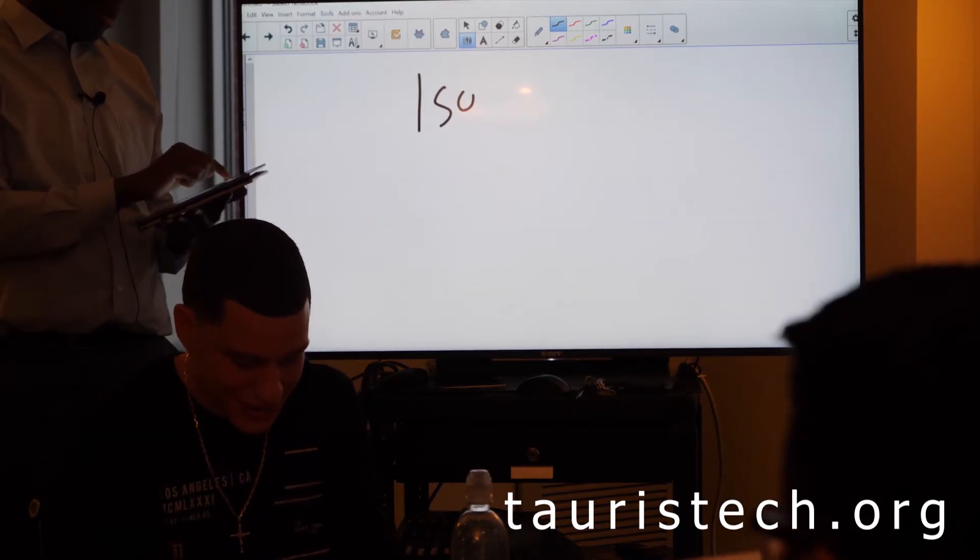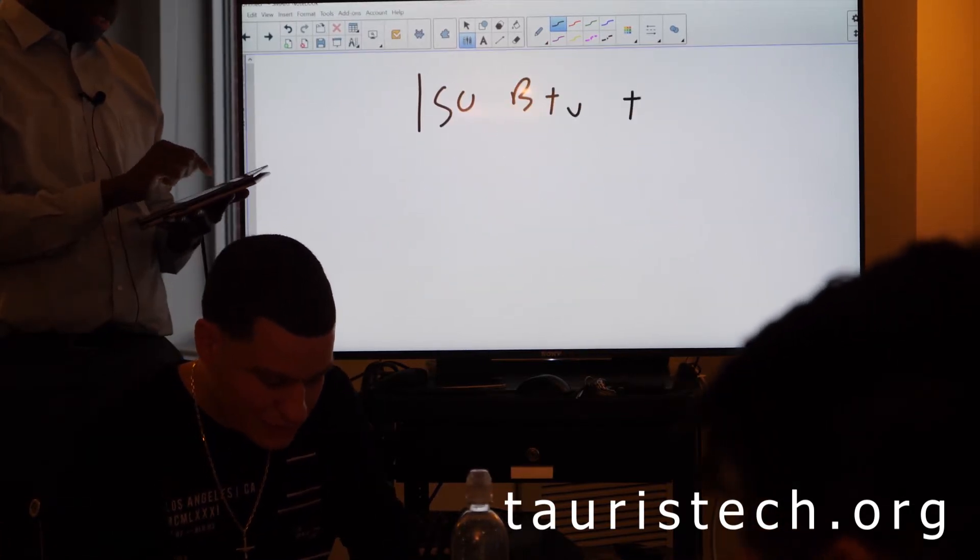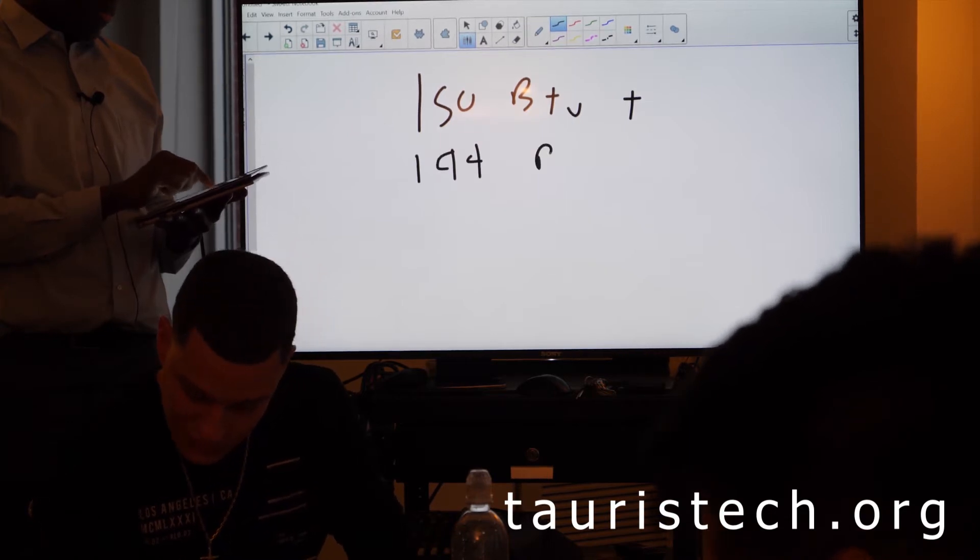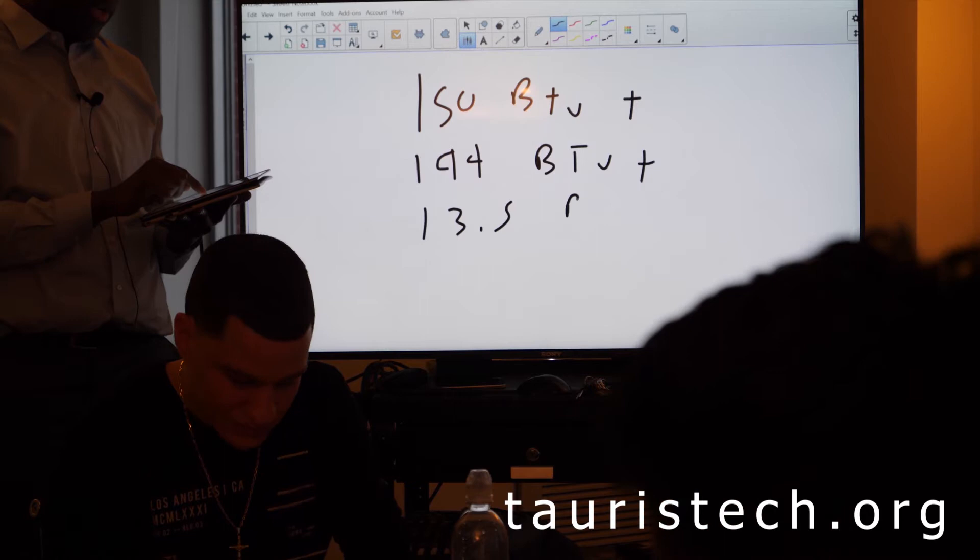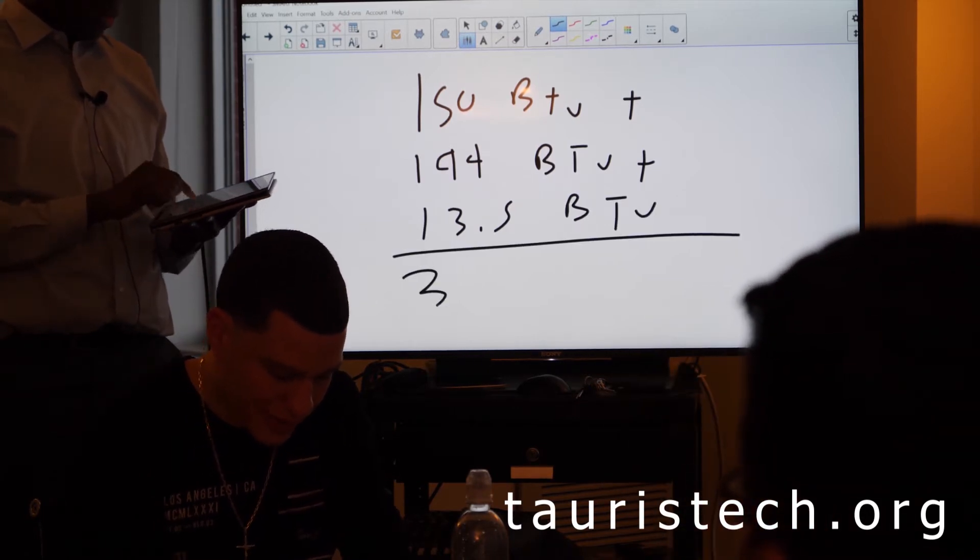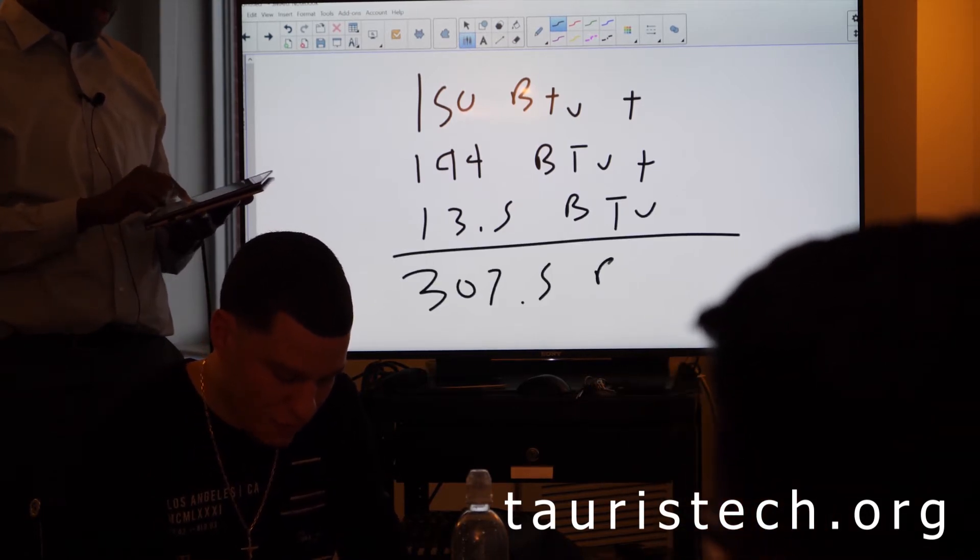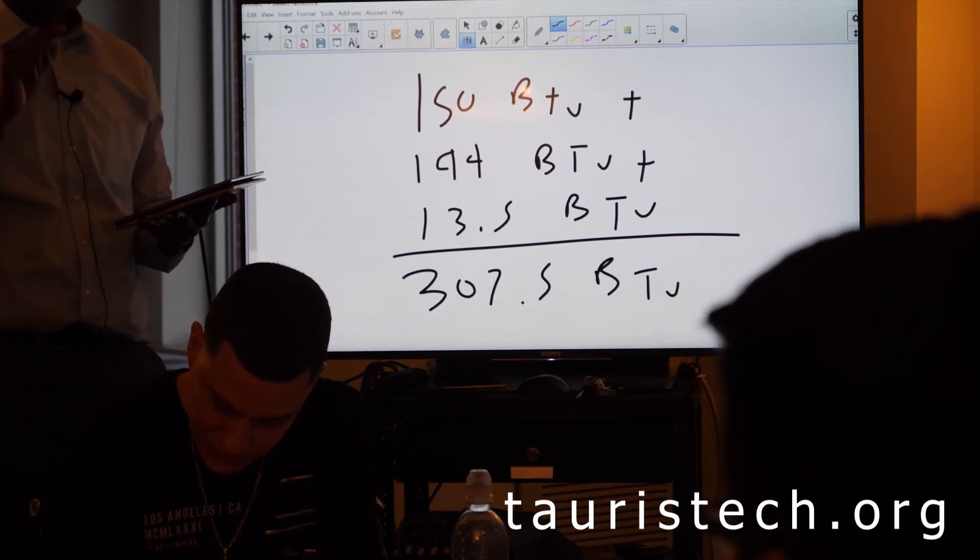And 150 BTU plus 144 BTU plus 144 BTU equals 307.5 BTU per pound.